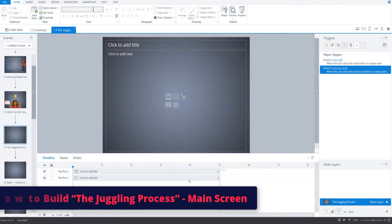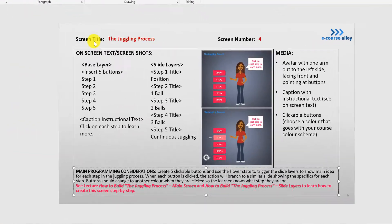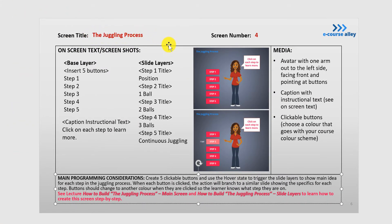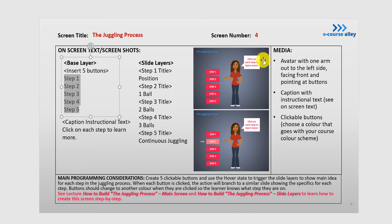Now we're going to look at how to build the juggling process main screen. Let's go back to the storyboard. This is the slide that talks about the juggling process. There's going to be a base layer where we're going to insert five buttons. This screen is where the learner can click on each step to branch to that information, and they can return back to the screen later — it allows them to click through as they go.